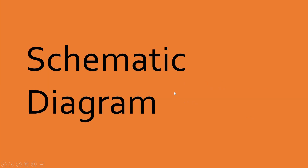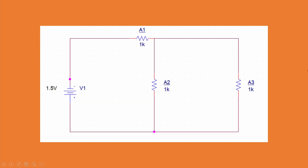So now let's see the schematic diagram. This is the schematic diagram. There are one voltage source and three resistors in total. The resistors are 1k ohm each and the voltage source is 1.5V. The resistor A2 and A3 are connected in parallel, and in series with A1. So this is the schematic diagram of my project.